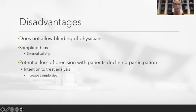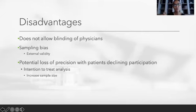Lastly, a disadvantage is the potential loss of precision: if patients decline participation after receiving consent, a group may end up with fewer participants. This type of design is analyzed using intention-to-treat analysis, meaning results are evaluated whether the patient participated or declined. A way to address this is by increasing the sample size of the study, which allows researchers to have more data as more participants are included.